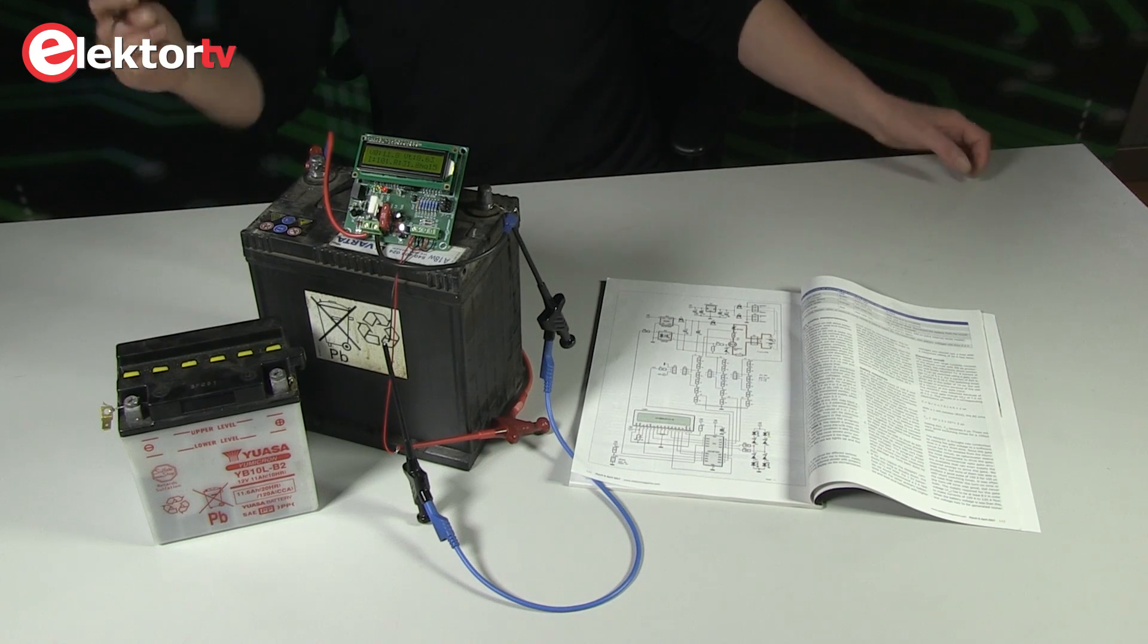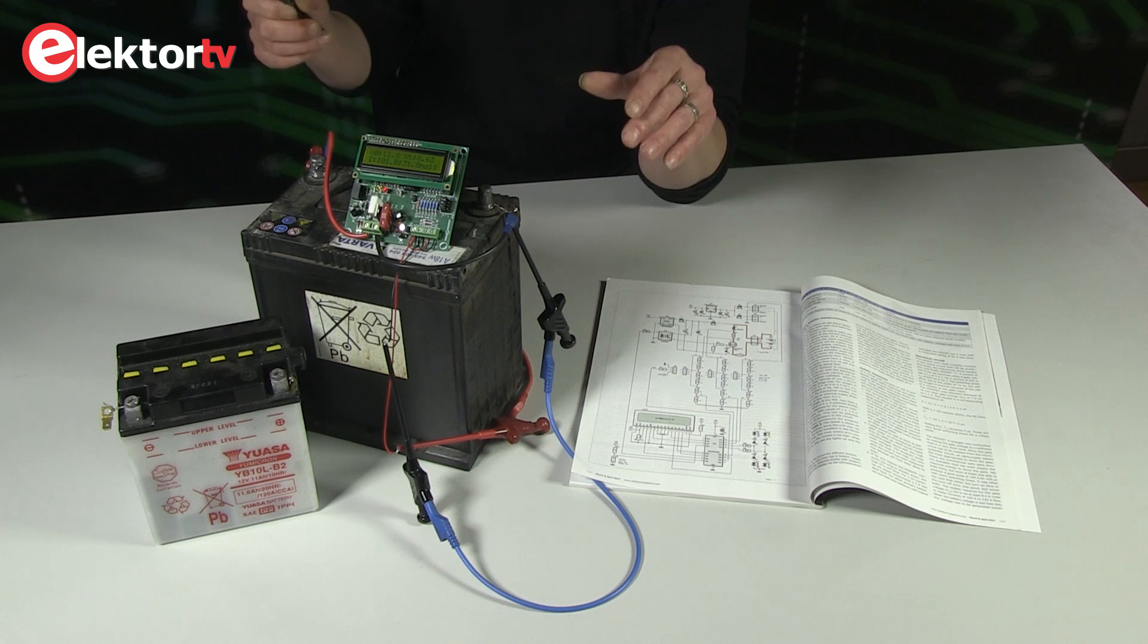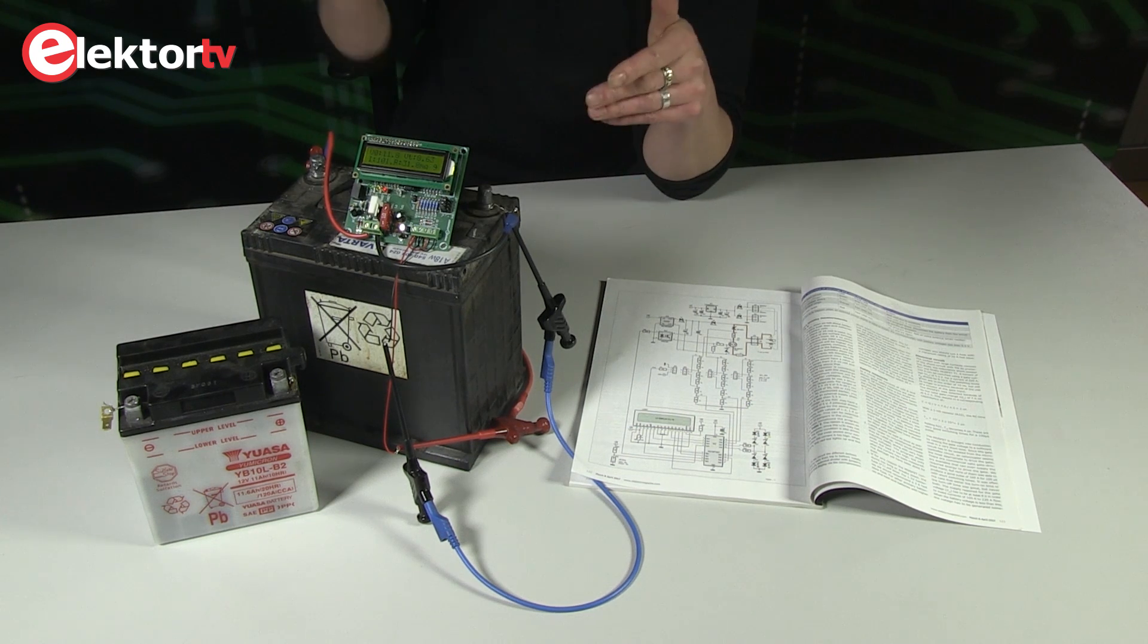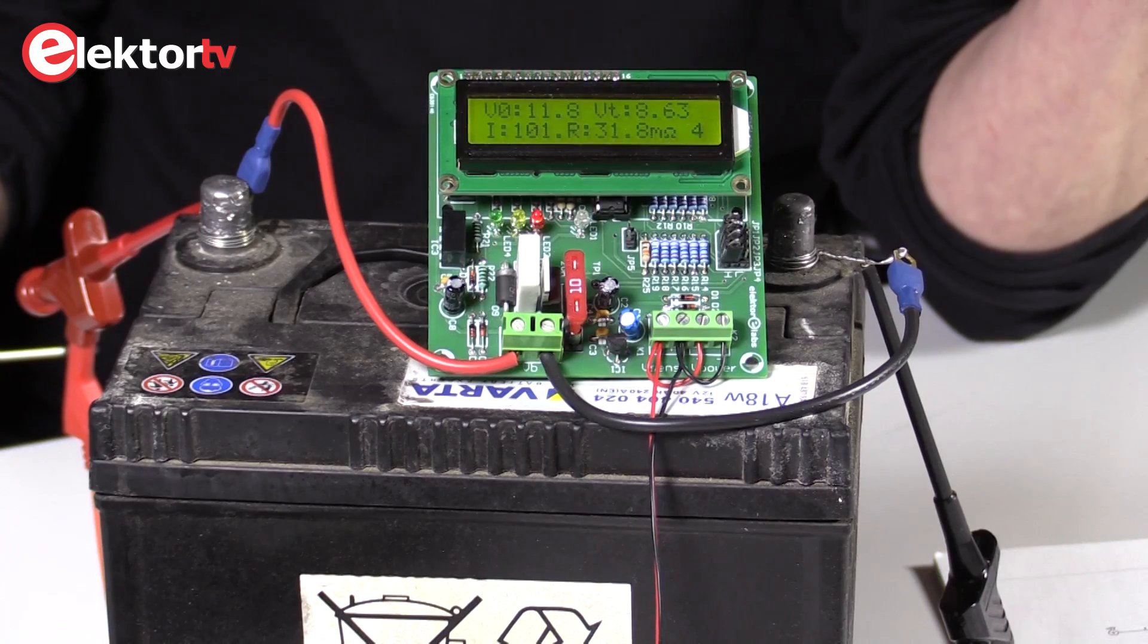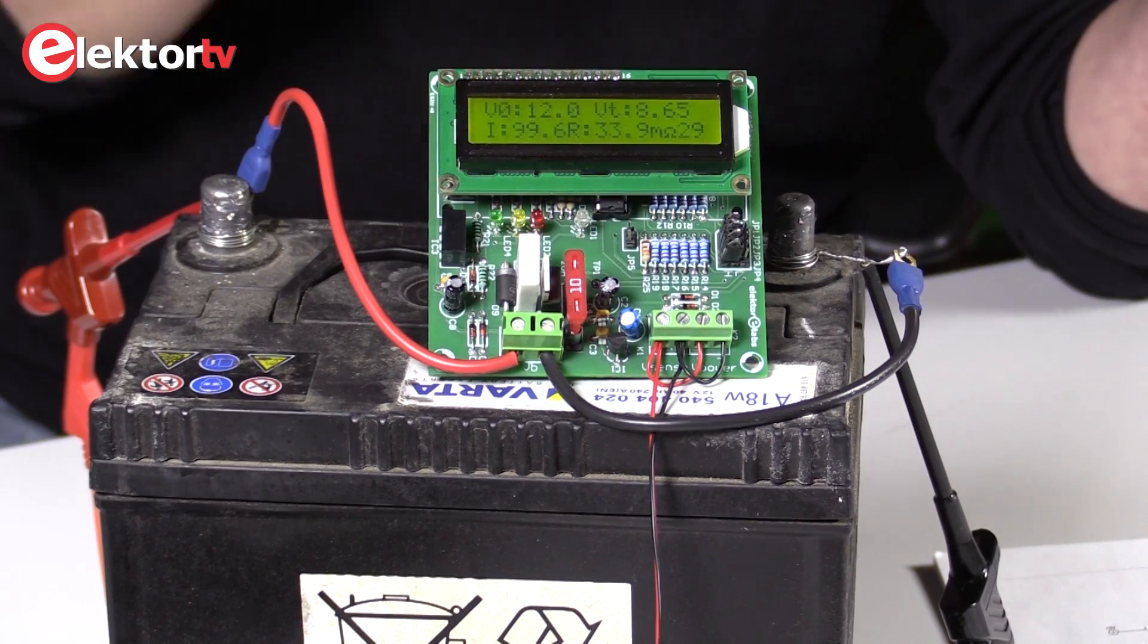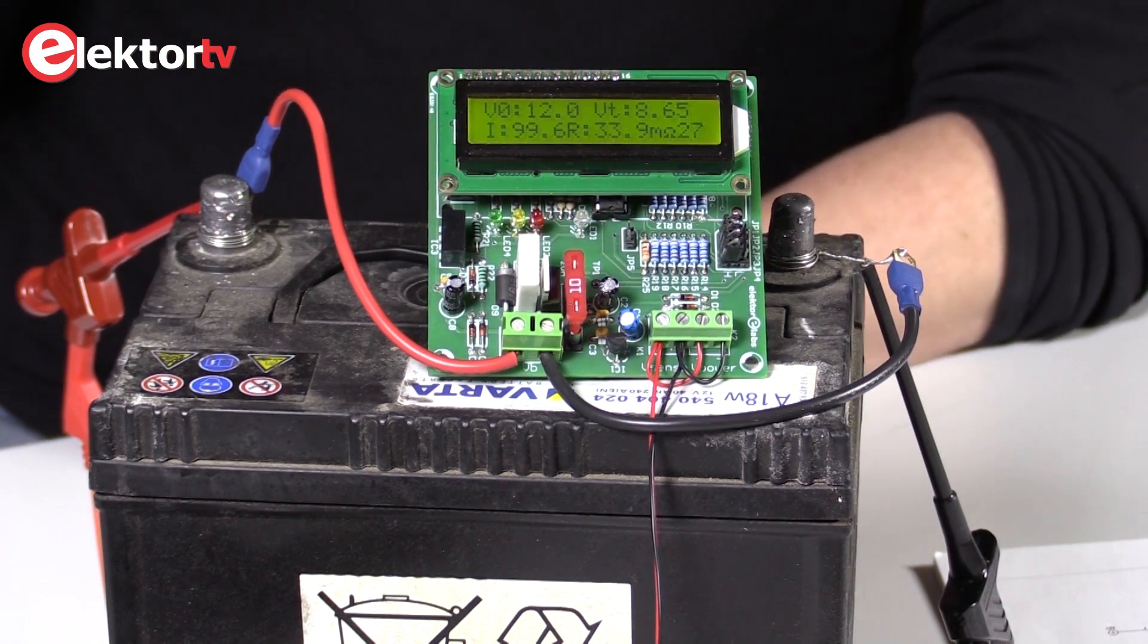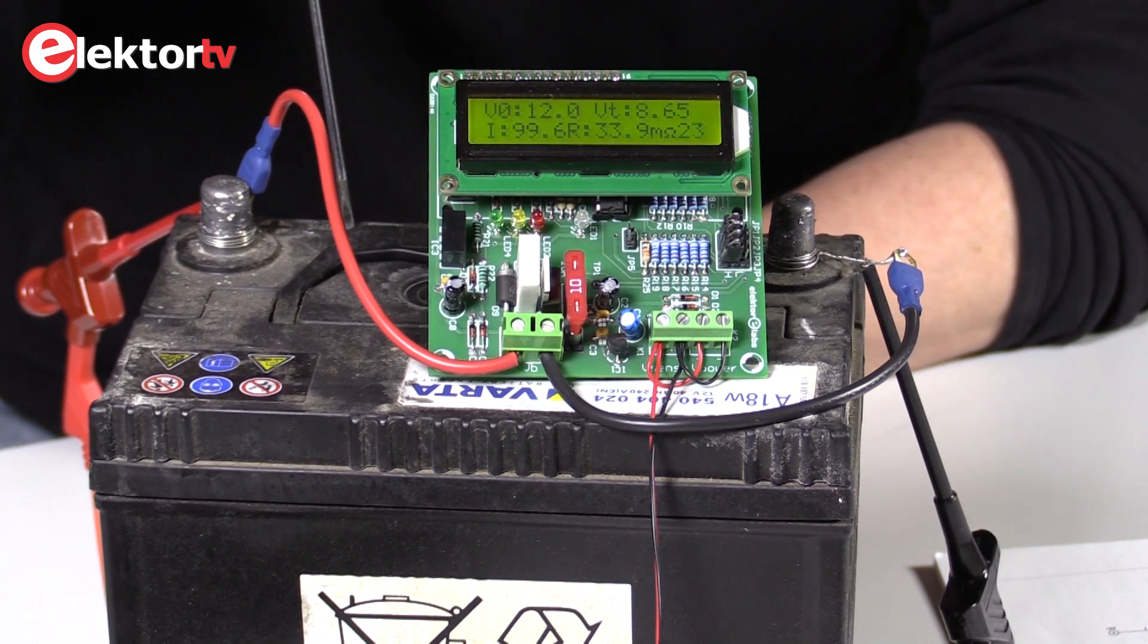You can also connect it together with a battery charger so you can pulse the battery while the battery is being charged. But in that case it's better to put some kind of choke between the charger and the battery in order to get the current pulses only from the battery and not from the charger.